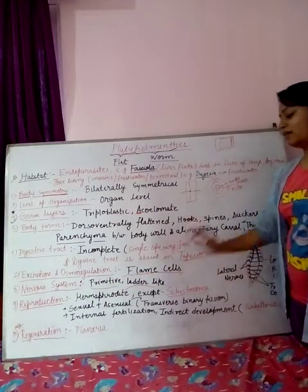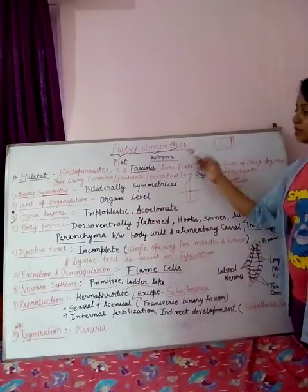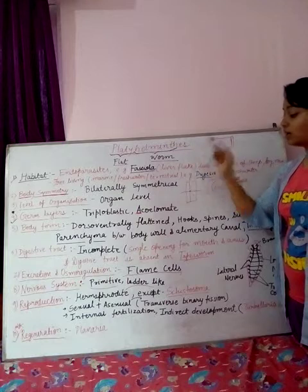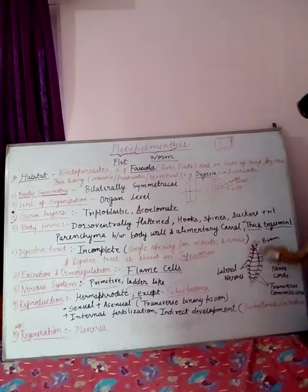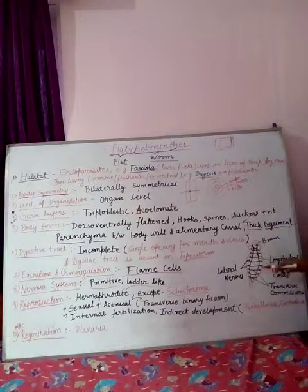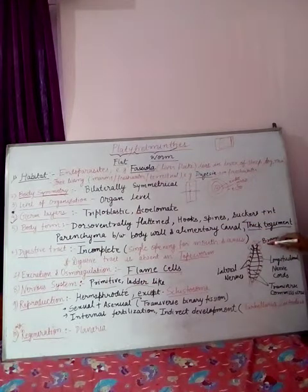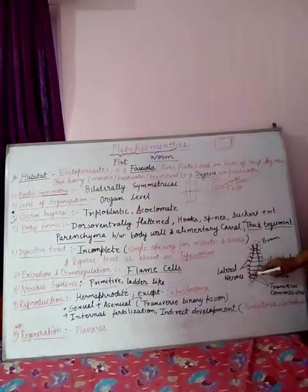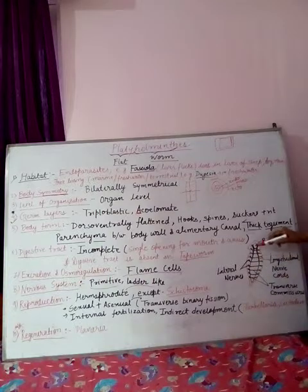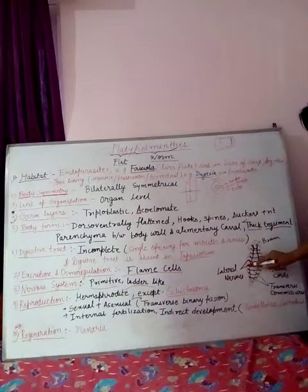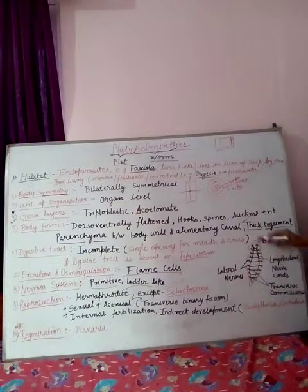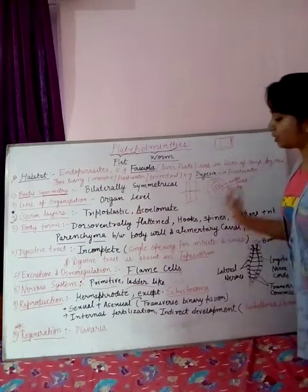The nervous system is primitive type and ladder-like. It is the first time a central nervous system appears in Platyhelminthes. I have drawn a diagram of the planarian nervous system — you can see the ladder-like structure with the brain at the upper part, longitudinal nerve cords, transverse commissures, and lateral nerve branches. All these constitute their primitive nervous system.